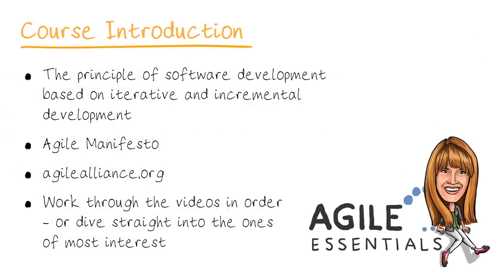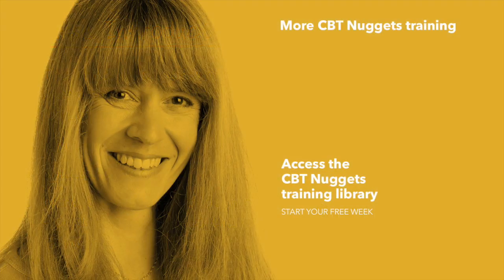To wrap up this nugget: we now know that Agile is the principle of software development based on iterative and incremental development, an alternative to sequential waterfall project planning. We looked at the four values of the Agile Manifesto, and we saw that the Agile Alliance website is a really good resource, particularly the glossary. If you are new to Agile, it would make best sense to work through the videos in order, but it's not a huge problem if you prefer to dive straight into the topics of most interest to you. I hope this has been informative for you, and I'd like to thank you for viewing.